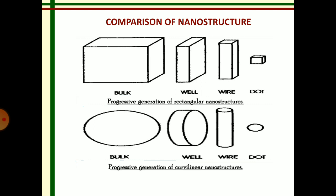Then, comparison of nanostructure. This diagram shows how the nanostructure varies from the bulk form to the dot form. The first diagram shows progressive generation of rectangular shape to the dot material. The next one shows progressive generation of curvilinear shape into nano dot sources.